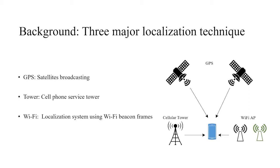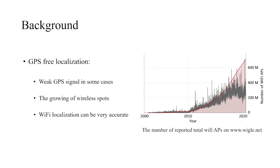Background: there are three major localization techniques as we can see here - GPS, cellular tower, and WiFi. A smartphone may use GPS for localization, but currently smartphones also use WiFi and cellular tower signals to get more accurate localization. Recently, GPS-free localization grows very fast, mainly because there are weak GPS signals in some cases and wireless spots are growing very fast, as we can see from the right figure. WiFi localization can be very accurate.